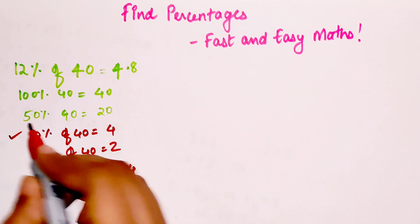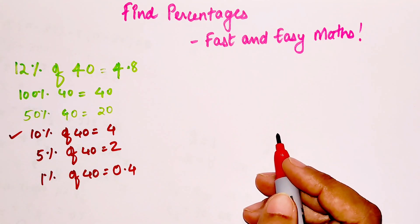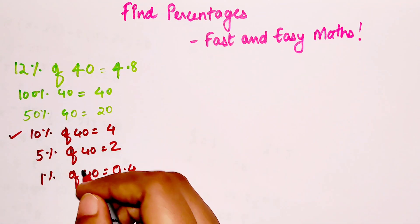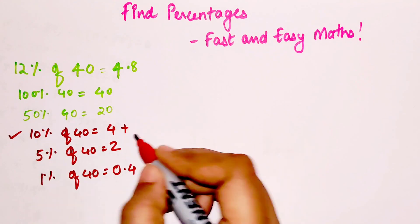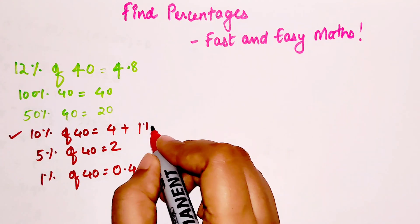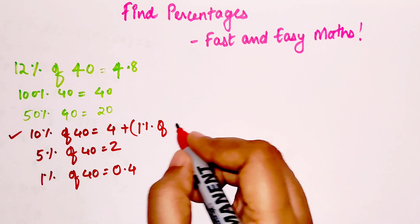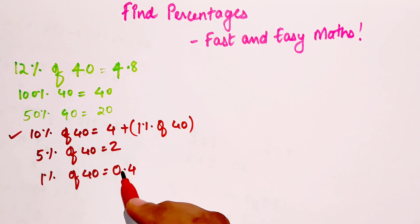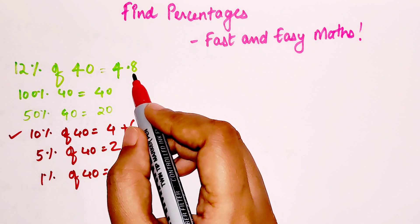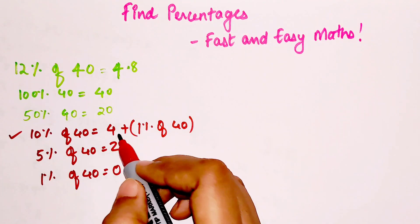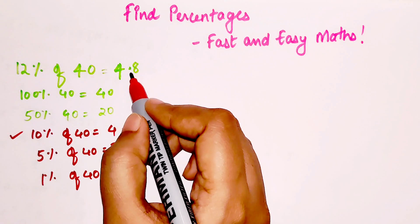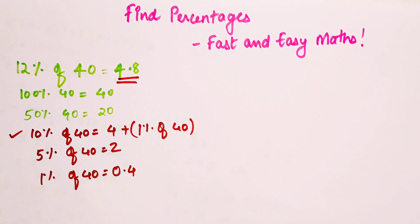So 1% of 40 would be 0.4. So what did I do for 12% of 40? Very quickly I used 10% of 40 which is 4, and then to that I added 2 times 1% of 40. So 2 times 0.4 is 0.8, so 4 plus 0.8 gets me 4.8. I hope you all are understanding how to find this trick.